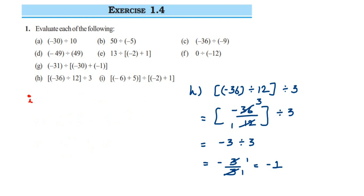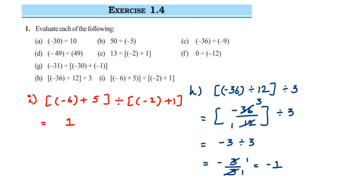Problem i: (minus 6 plus 5) divided by (minus 2 plus 1). Solve each bracket first. For the first: minus 6 plus 5 — different signs, so subtract: 6 minus 5 is 1, and since 6 is greater with a negative sign, we get minus 1. For the second: minus 2 plus 1 — same process: 2 minus 1 is 1, 2 is greater and negative, so minus 1. Now minus 1 divided by minus 1 — the negative signs cancel, 1 divided by 1 is 1, so the answer is 1.